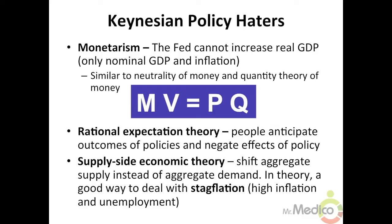Monetarism argues that the central bank often mismanages the money supply and causes unnecessary inflation. When the Fed or central bank increases the money supply, it cannot increase real GDP and alleviate unemployment — it will only increase nominal GDP and therefore inflation. This argument is seen in the monetary equation of exchange: MV = PQ, where M is money stock, V is velocity, P is price level, and Q is real GDP. Since velocity is relatively stable, an increase in the money supply will cause inflation, not a guaranteed increase in real GDP.